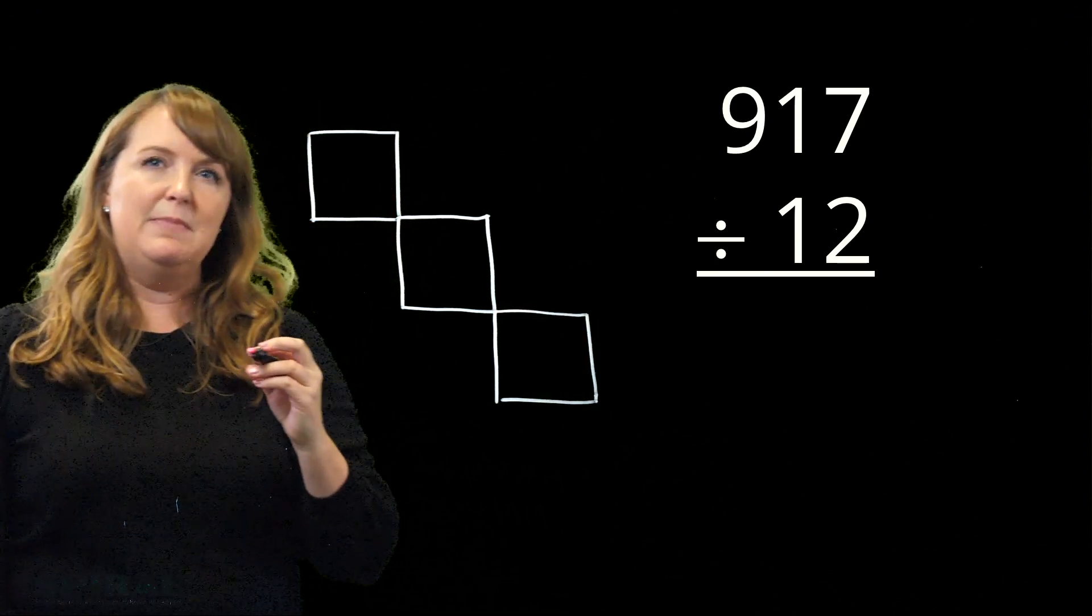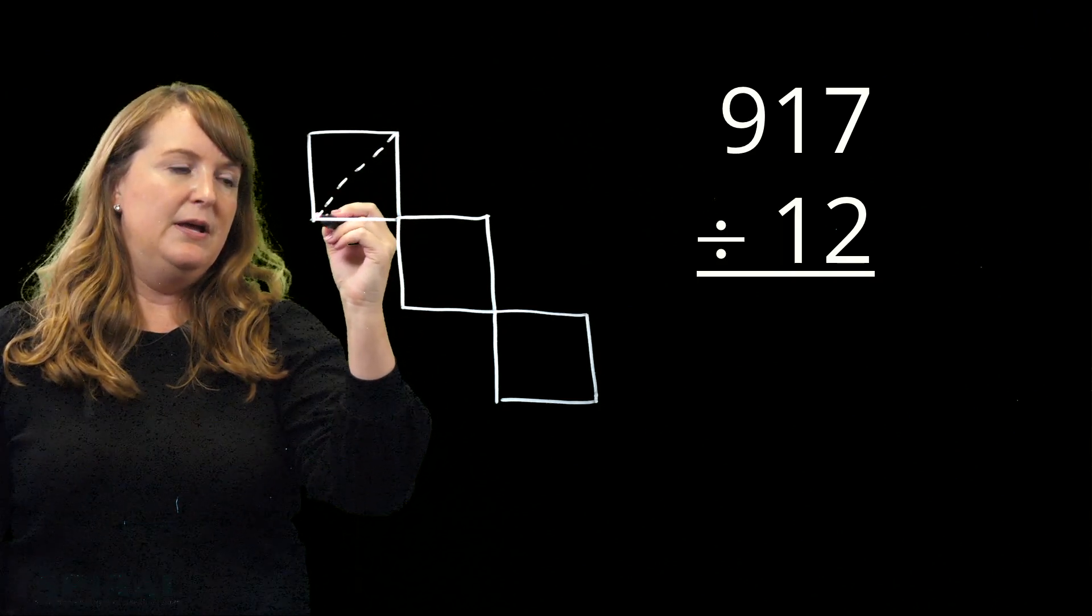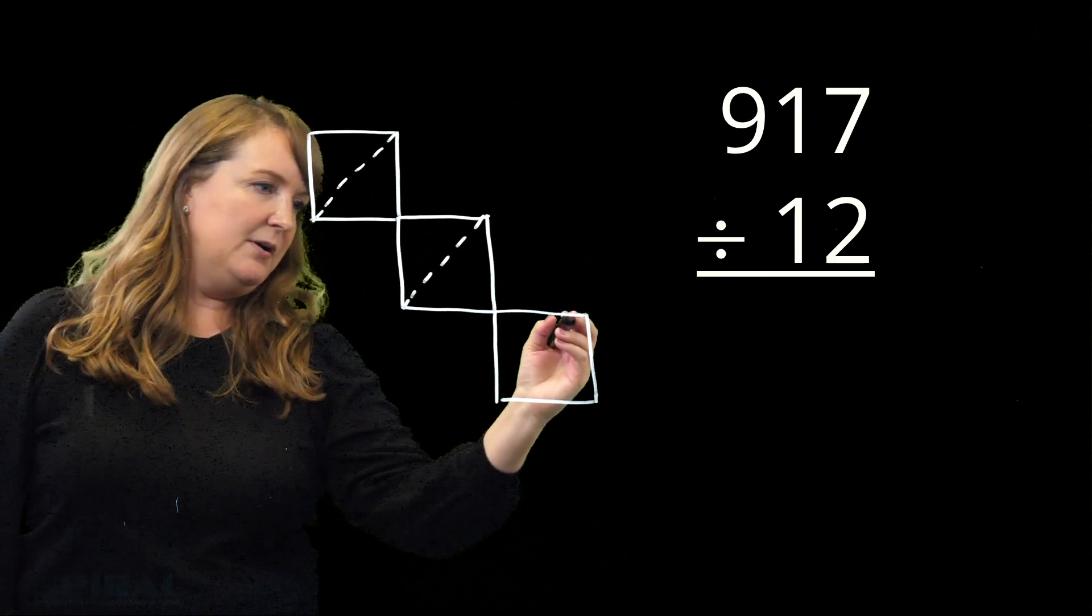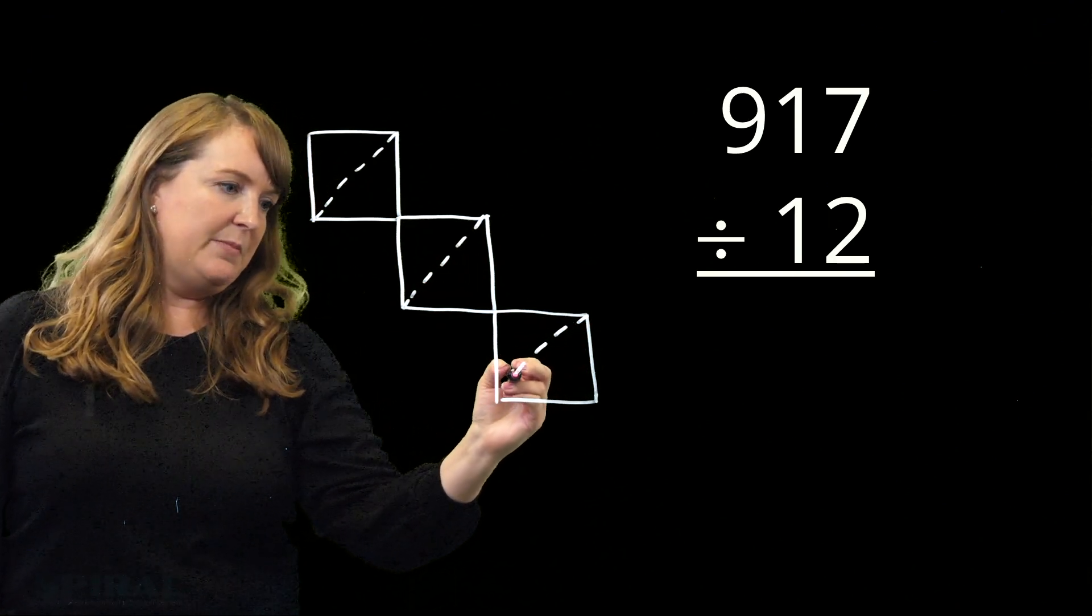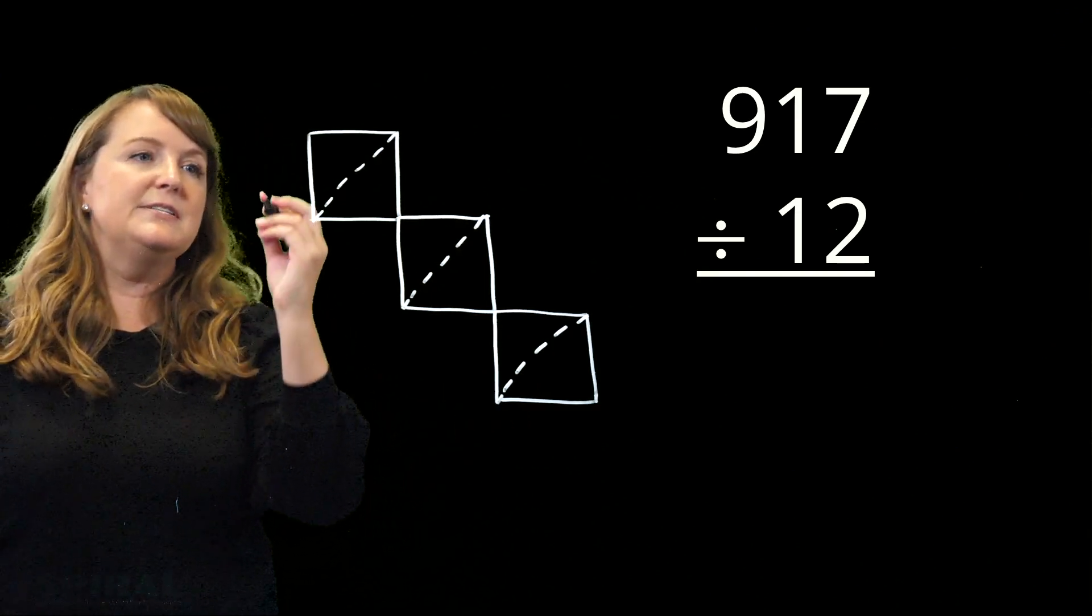And then I'm going to draw in my lattice from the top right hand corner to the bottom left hand corner. And I do not need to extend it out beyond my square. We did that for multiplication, but we do not have to do that for division. And then I'm going to set up the problem.